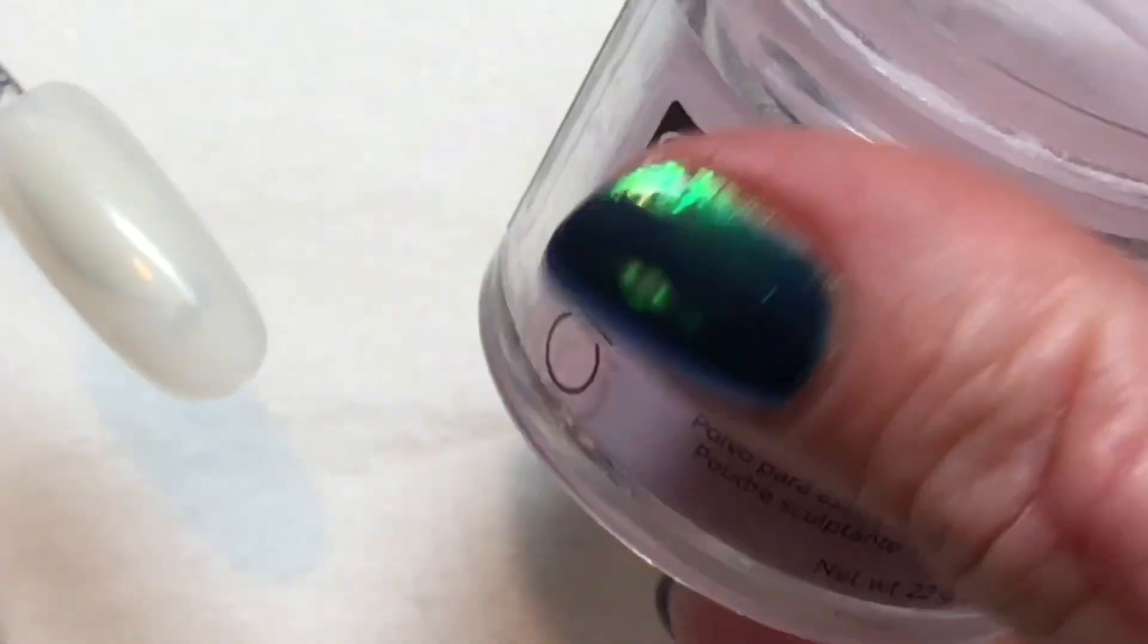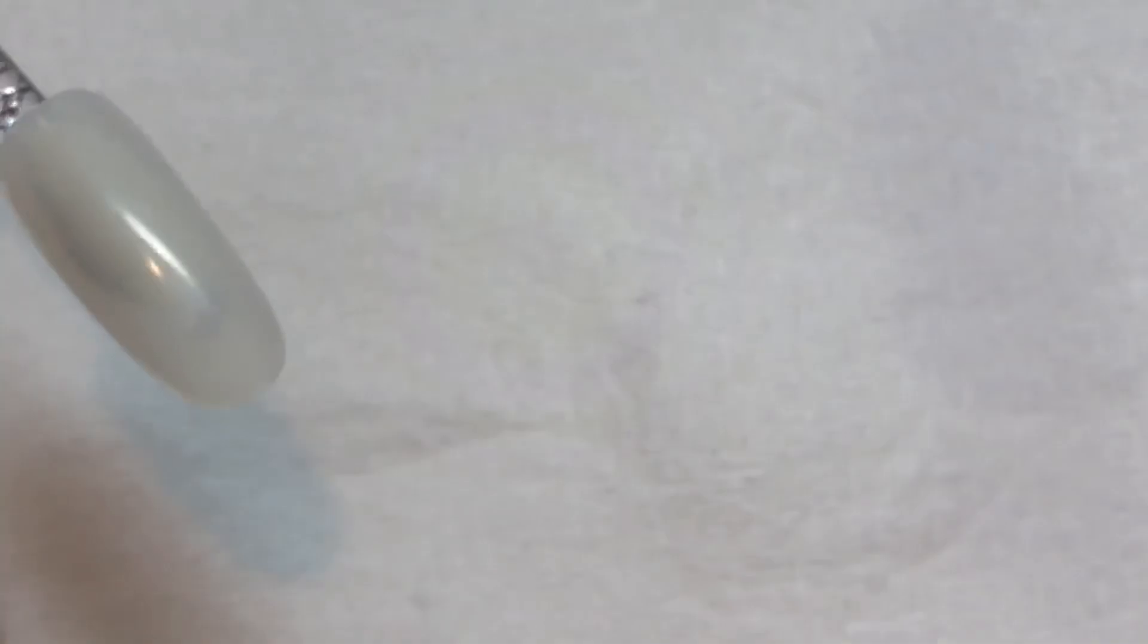Let's take a look at how you can get rid of that ridge along the back of your nail when you're doing liquid and powder or in zone 3.